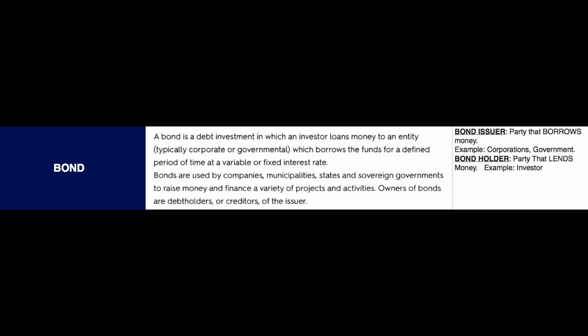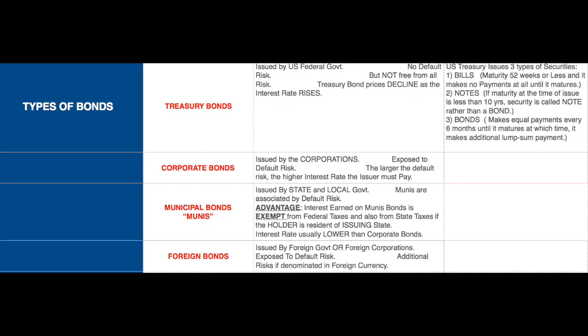Owners of bonds are debt holders or creditors of the issuer. A bond issuer is a party that borrows the money — for example, corporations and governments. A bondholder is a party that lends the money — for example, the investor. There are four main types of bonds: the Treasury bond, corporate bond, municipal bond, and foreign bond.